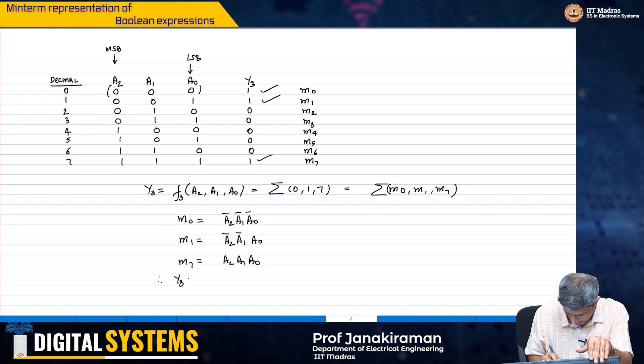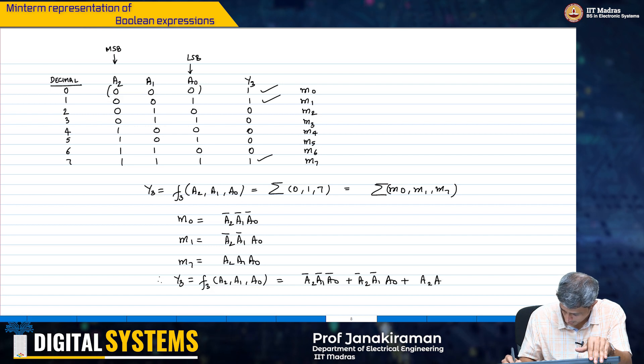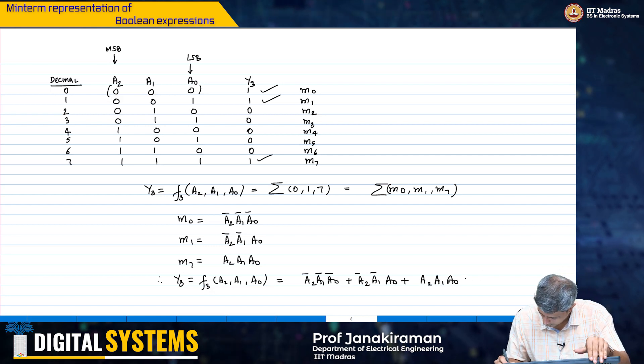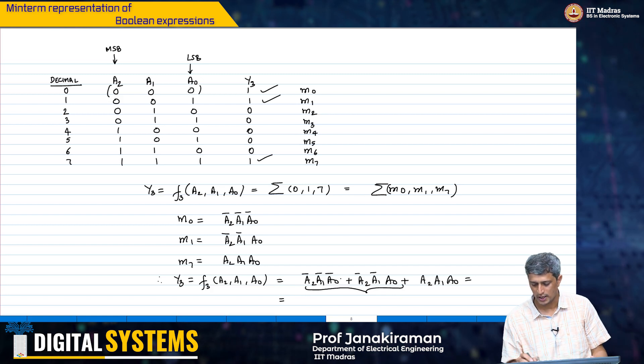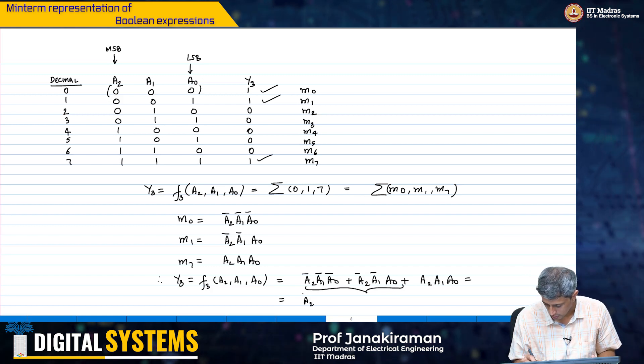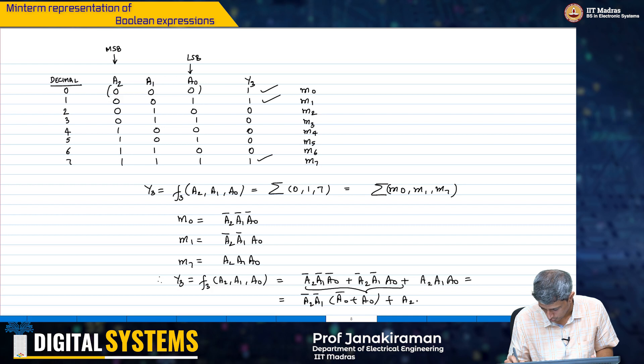Therefore, the function y3 equal to f3 of a2, a1, a0 is simply going to be a2 bar, a1 bar, a0 bar plus a2 bar, a1 bar, a0 plus a2, a1, a0. And this can be simplified by essentially considering these 2 terms. It will simply come out as a2 bar, a1 bar into a0 bar plus a0 plus a2, a1, a0.